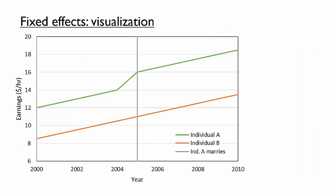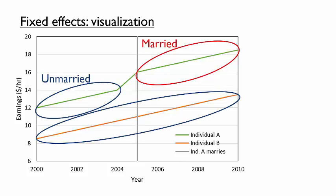Let's try to visualize how the fixed-effects strategy compares to pooled OLS. This graph shows the hypothetical earnings of two individuals by year. Suppose that individual A is unmarried until 2005, then he is married through the end of the dataset in 2010. Individual B is unmarried for the entire time shown. Although the idea is similar to the real data from the NLSY, this example is idealized to simplify the graph. Let's first think about what the pooled OLS model does: it compares the average earnings across observations of individual A when he is married to the average earnings when he is unmarried and individual B for the entire time period.